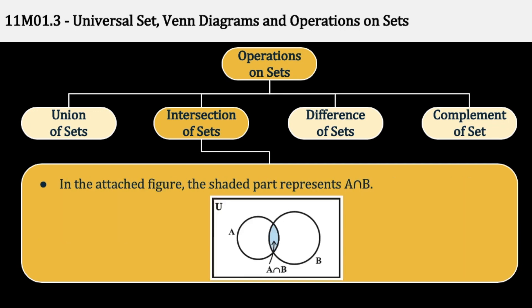Venn Diagram से हम इसको ऐसे दिखाते हैं — जो दो Sets का Common Part है, वो होता है A Intersection B. जैसे कि Examples में देखा था, Common Part में वो Elements आते हैं जो कि A में भी हो और B में भी हो.